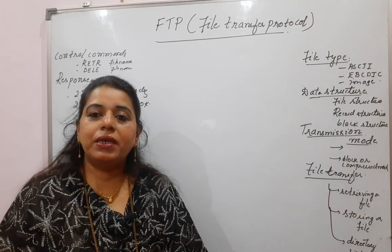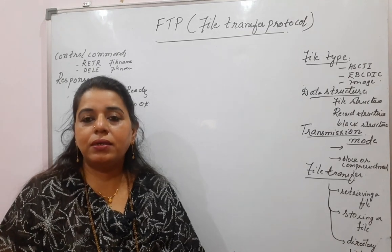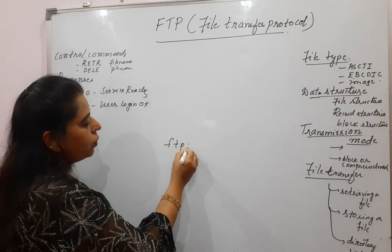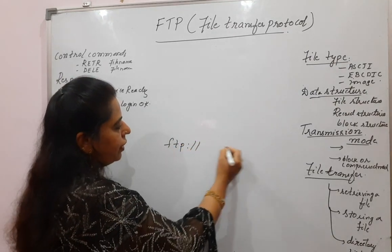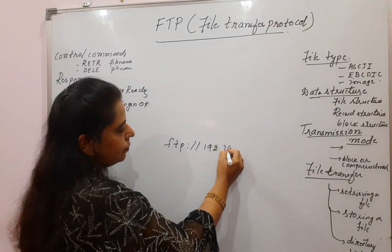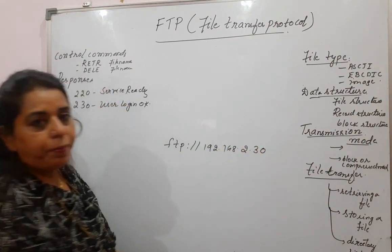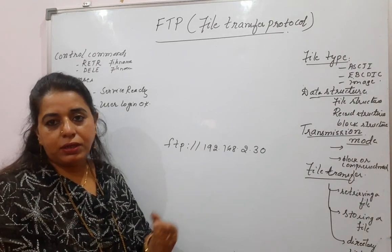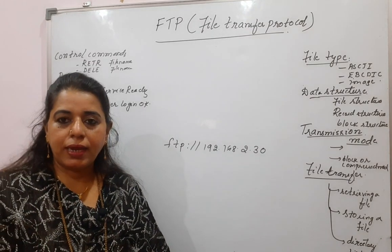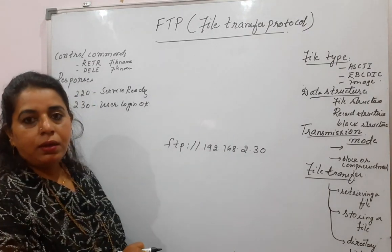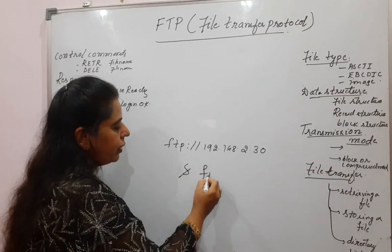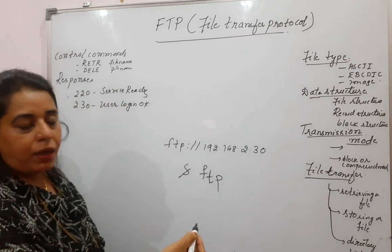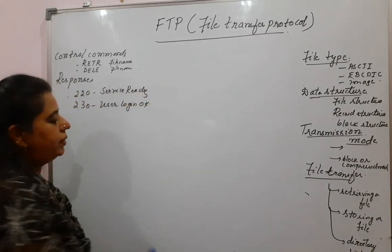To first establish a connection with the server, there are various methods. The first one: in the address bar, you can type FTP colon double forward slash, then the IP address of the server, and you will get connected to the server. You have another method: at the dollar prompt itself, you can type the command FTP followed by the hostname or the server name, and you can start doing the transfer of files.